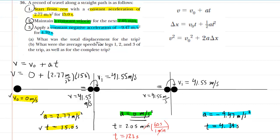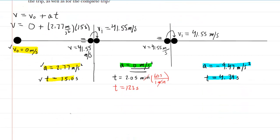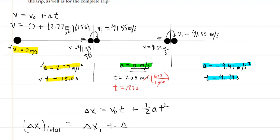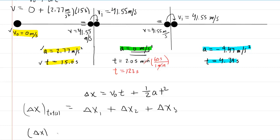With that preliminary work done, we can calculate Part A — the total displacement for the trip. Since the object moves in a straight line, we apply the displacement equation to each of the three segments and add them together: Δx_total = Δx₁ + Δx₂ + Δx₃, using Δx = v_i·t + ½·a·t².